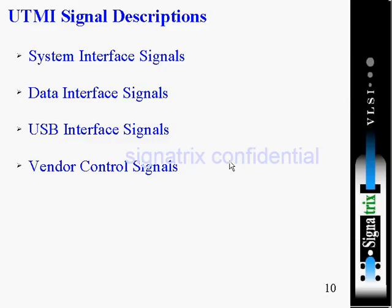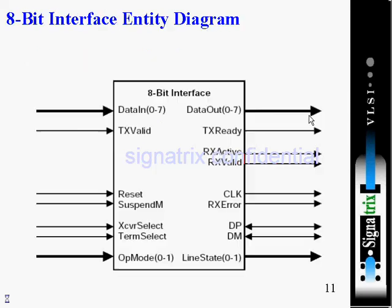We are having four categories: system interface signals, data interface signals, USB interface signals, and vendor control signals. We'll see them one by one. First, we'll start with system interface signals.